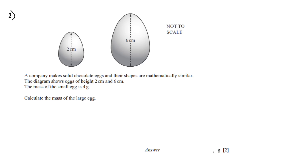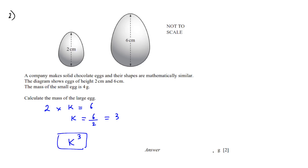Mass is related to volume. Here the heights of both eggs are given. So 2 times the scale factor k equals 6, meaning k equals 6 divided by 2, which is 3. This k is the scale factor for one dimension such as height or radius. To find the volume scale factor we cube k. So the mass is 4 multiplied by 3 cubed, which gives 108. The answer is 108 grams.